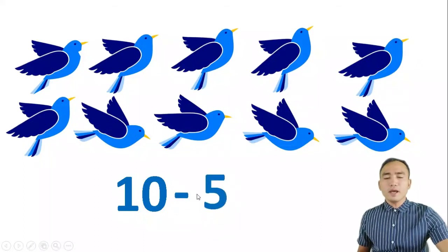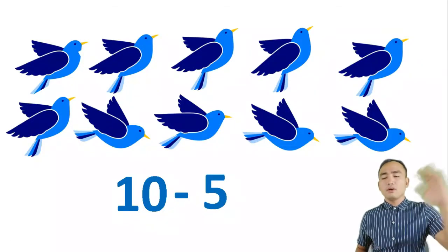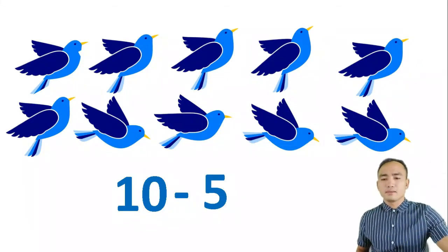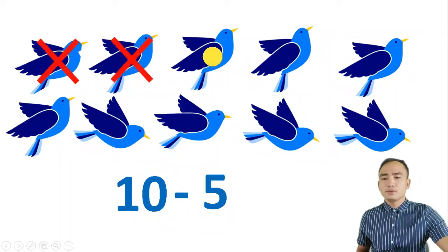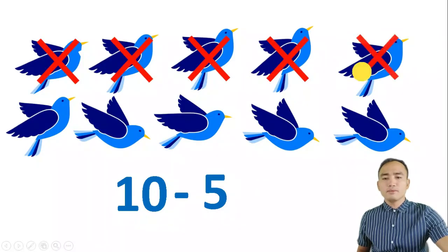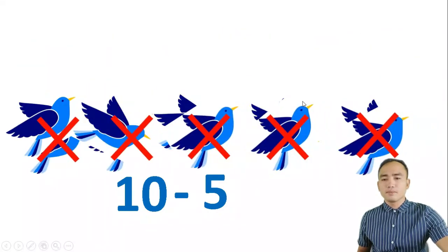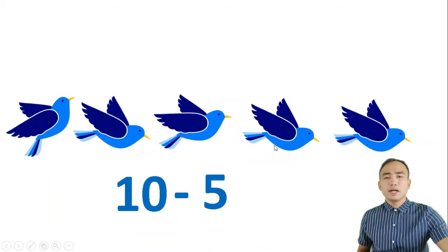If 5 of the birds flew away — 1, 2, 3, 4, 5 — how many birds were left?